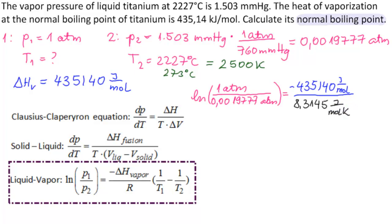And then we have our temperatures, which is 1 over T1—T1 is what we're looking for—minus 1 over T2. T2 is 2,500 Kelvin. So everything cancels as we need it to cancel. All the units cancel, and T1 will be in Kelvin.